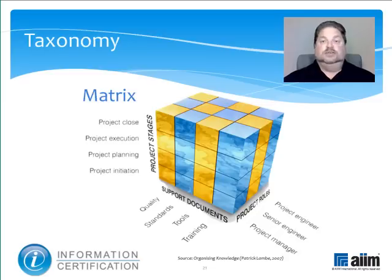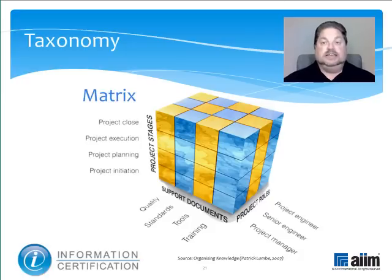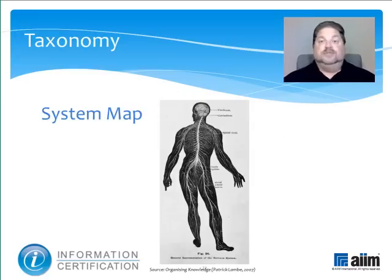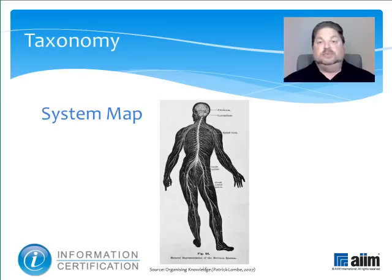Matrices are used to organize multiple individual taxonomies that intersect. For instance, IT project management includes information about the project staff, supporting documents and stages of implementation. A matrix taxonomy would allow users to navigate by jumping from one taxonomy to another and expose different kinds of information related to the original query. System maps are visual representations of a domain of knowledge that are labeled with relevant categories, like a diagram of the human body that points the way to medical content about the human nervous system.